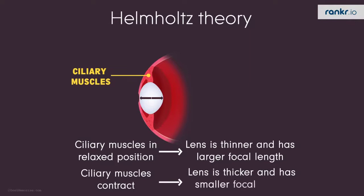So when the object is nearer, the lens increases its thickness to form its image on the retina.